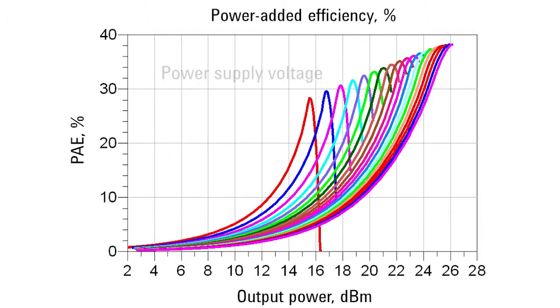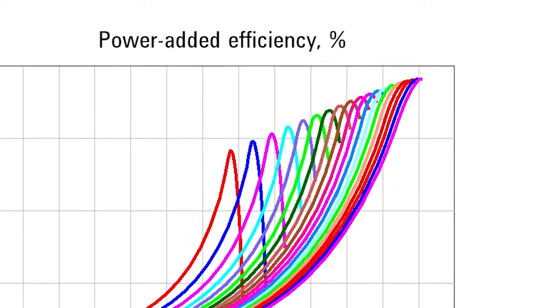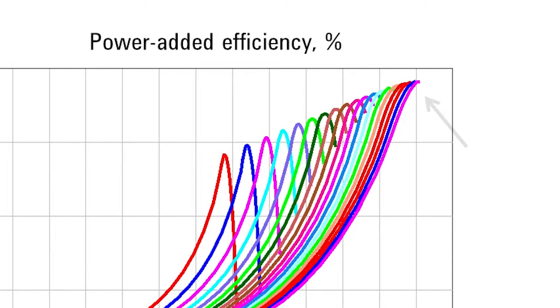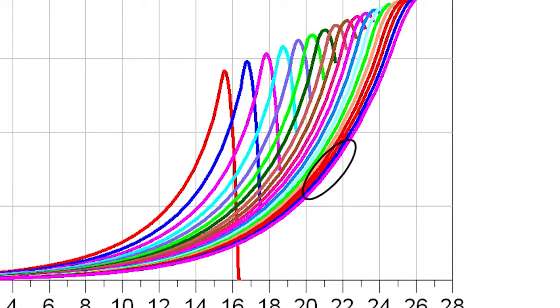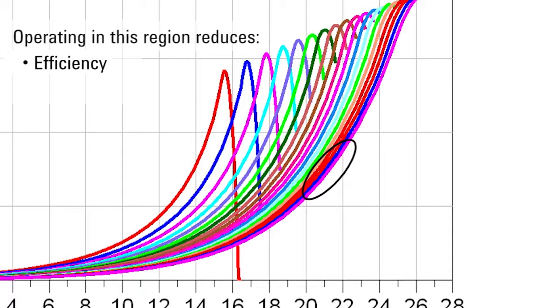Each of the different curves represents a different power amplifier power supply voltage. Let's examine the bottom curve. Here you can see that, in fact, the power amplifier is most efficient at the higher output power levels. Unfortunately, as we discussed previously, to avoid clipping, we have to operate the power amplifier at a lower average power level. This reduces efficiency and therefore reduces the battery life in the mobile handset.